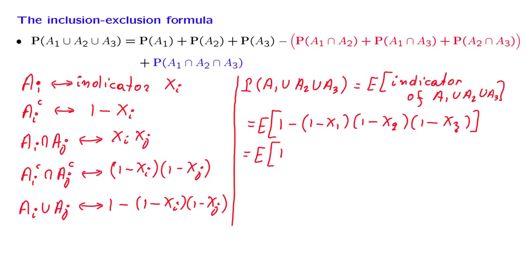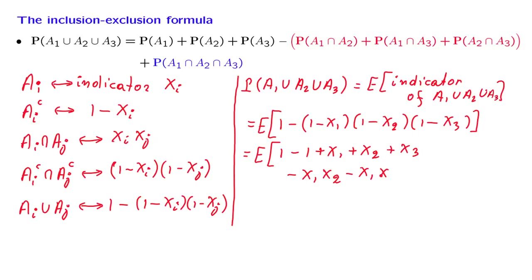When we multiply those three terms together, we get a bunch of contributions. One contribution with a minus sign is 1 times 1 times 1. Another contribution — minus times minus gives a plus — is x1 times 1 times 1, and similarly for x2 and x3. Then there is a contribution such as x1 times x2 times 1; accounting for the three minus signs overall, this gives minus x1 times x2, and similarly x1x3 and x2x3. Finally, there is a term x1 times x2 times x3; with four minus signs involved, everything shows up with a plus sign.